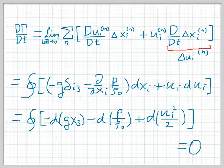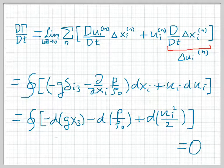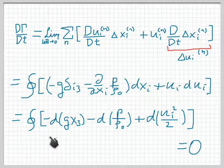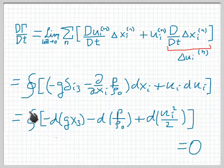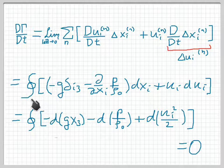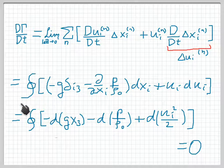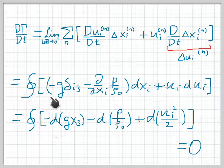So for our next step, we can now go ahead and take this limit as the differentials become small, and this becomes, once again, a line integral around a closed circuit. But now dui by dt has been replaced by the sum of the forces that make that acceleration,